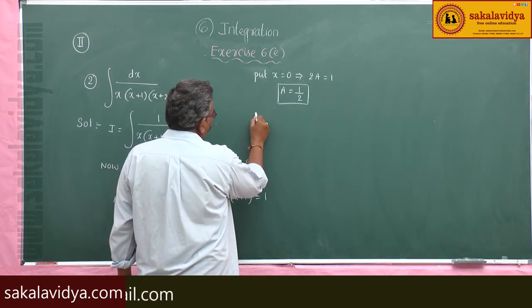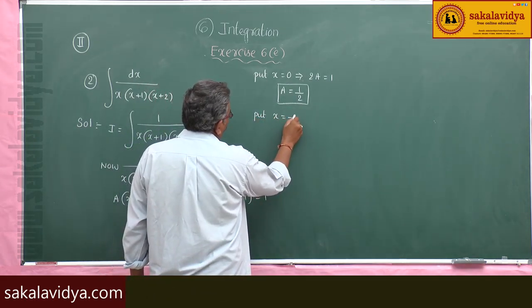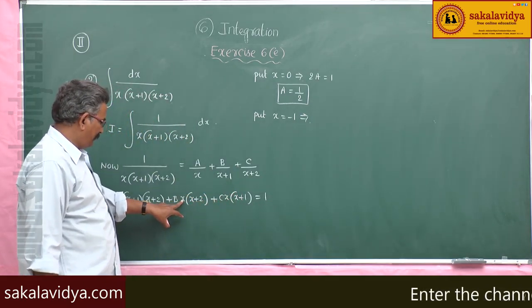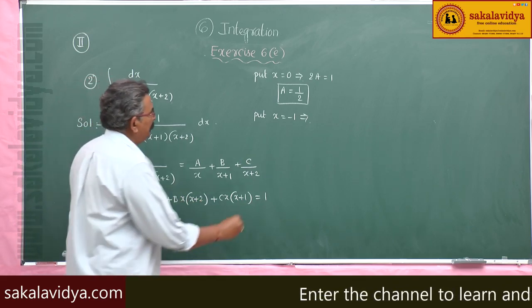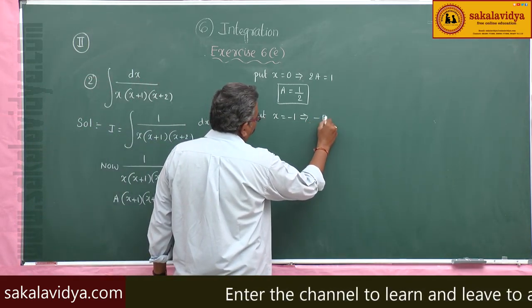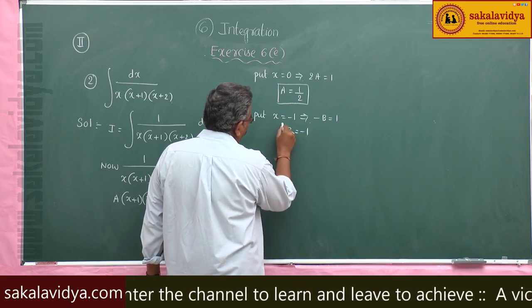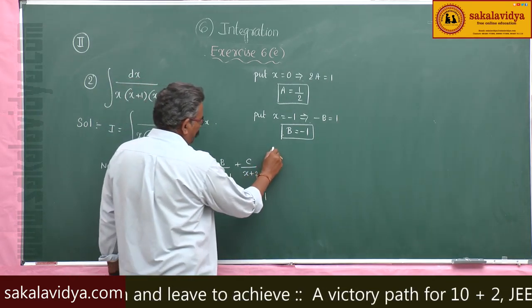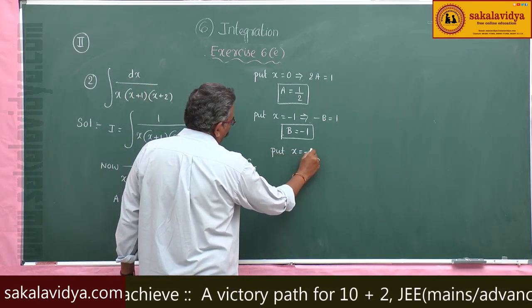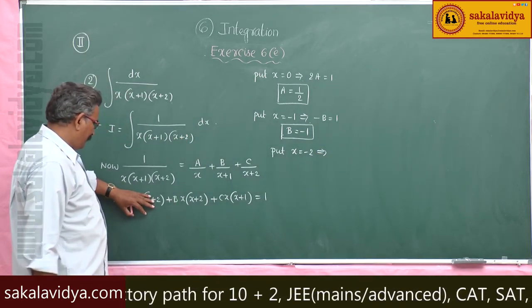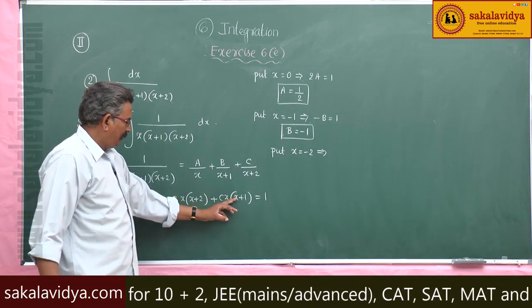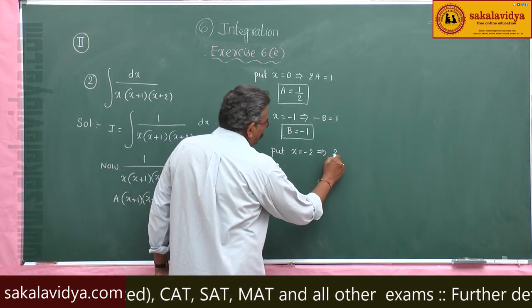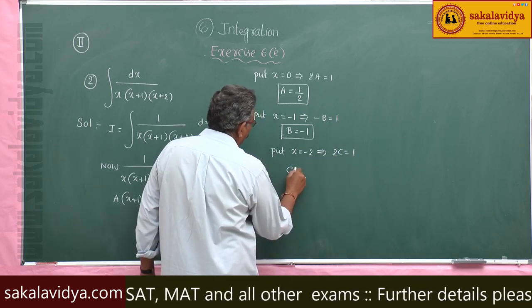Put x equal to minus 1. If you put x equal to minus 1, we get minus 1 times B equals 1, so B equals minus 1. Now put x equal to minus 2. We get minus 2 times 1 times 2C equals 1, so 2C equals 1, and C equals 1/2.